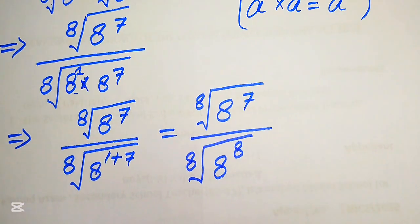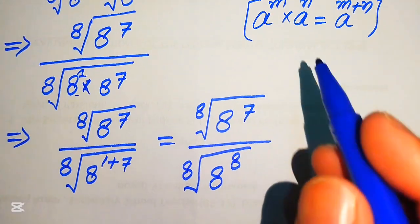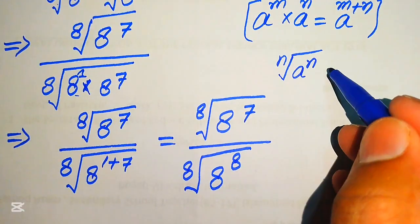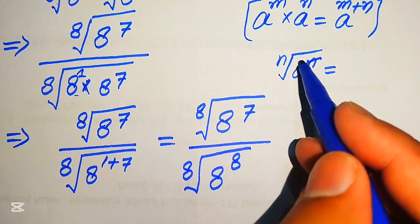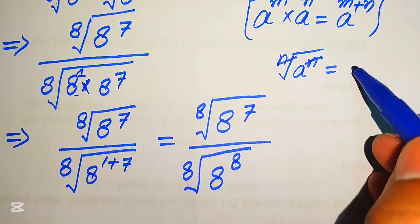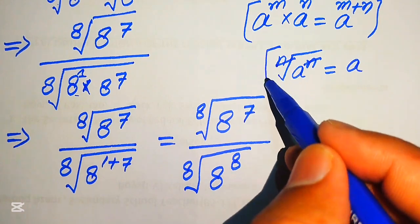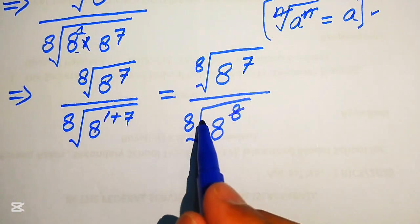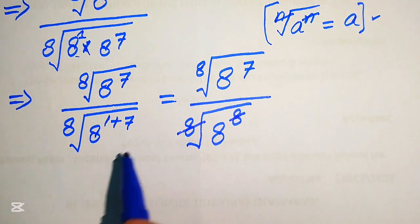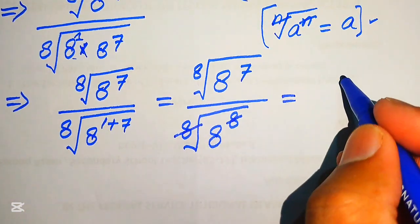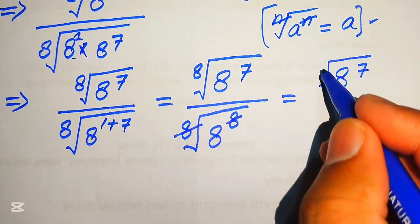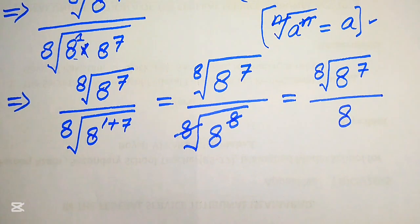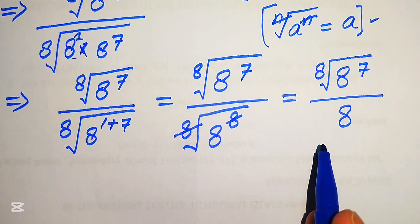We apply another exponent law: the nth root of a to the power of n — the n in the power and the nth root cancel each other, giving just a. So in the denominator, the 8th root of 8 to the power of 8 simplifies to 8. We now have the 8th root of 8 to the power of 7, divided by 8.